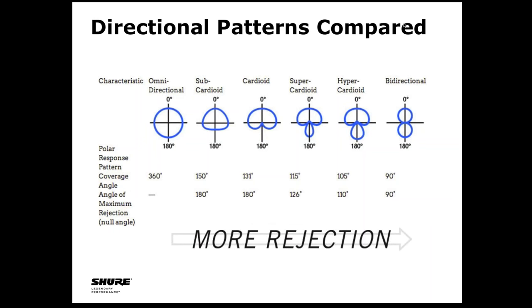Let's look at the directional patterns of the microphone. This refers to how microphones respond to sound arriving at different angles. Broadly, you can put this into two categories: omnidirectional, which picks up sound from all directions, or unidirectional, meaning it picks up sound from one direction. By far the most popular unidirectional type is the cardioid pattern, which gets its name from the fact that it looks kind of like an upside-down heart. This type picks up sound from one direction — zero degrees on axis — and its angle of greatest rejection is directly behind the microphone at 180 degrees off axis.